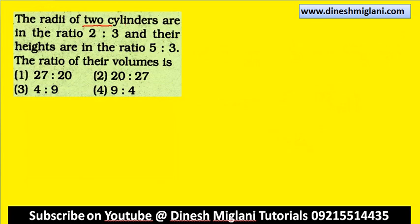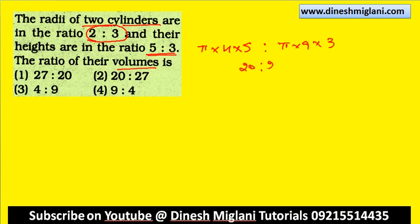If the radii of two cylinders are in the ratio 2:3 and their heights in the ratio 5:3, we have to find the ratio of their volumes. Volume = pi r squared into h. For ratio: 2 squared into 5 versus 3 squared into 3 = 4 into 5 versus 9 into 3 = 20:27. Second one is my answer — the ratio of volumes is 20:27.